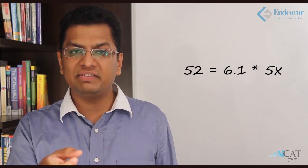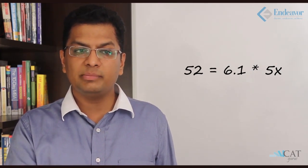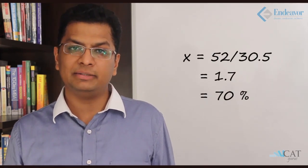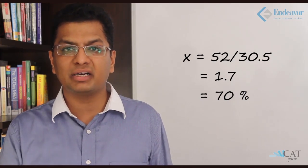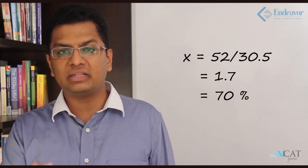So x will be 52 ÷ 30.5. This will give us 1.7. Now 1.7 is nothing but 170%, which means a 70% increase. Now that is the answer here.